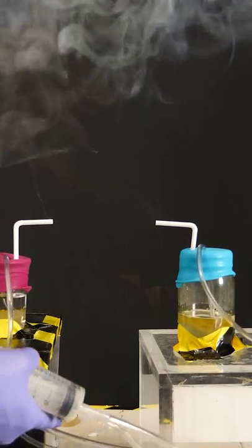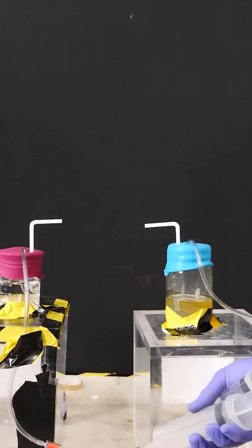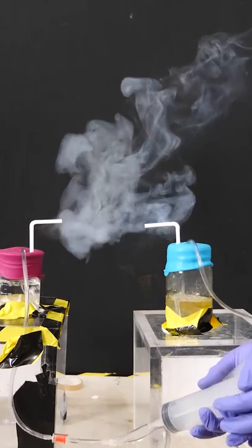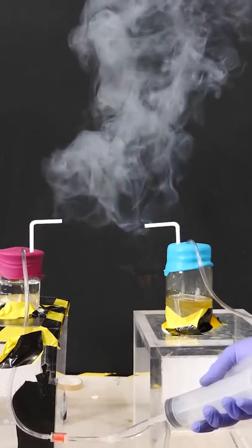When they combine, they make ammonium chloride, and these are small little crystals. So the white smoke is actually small crystals of ammonium chloride.